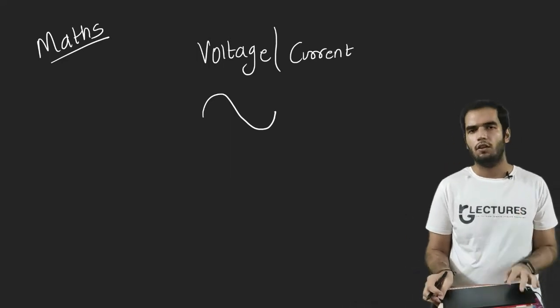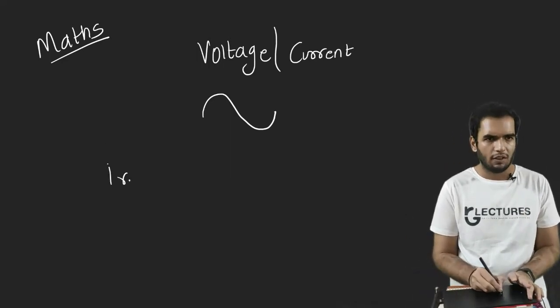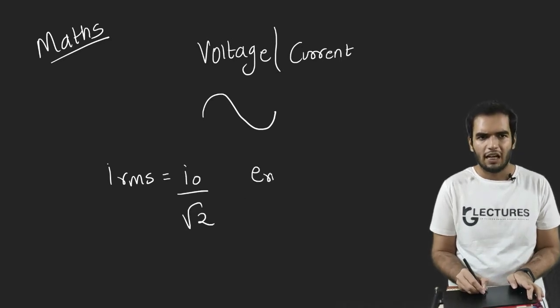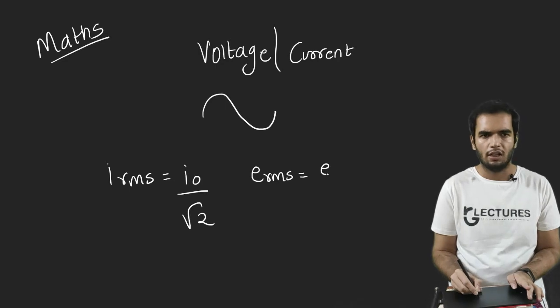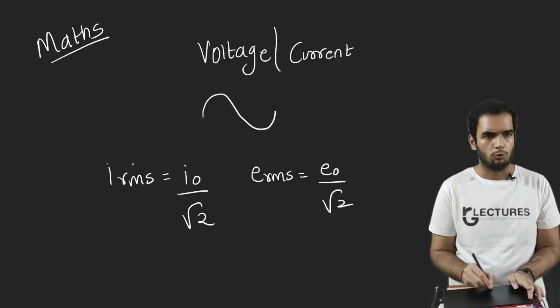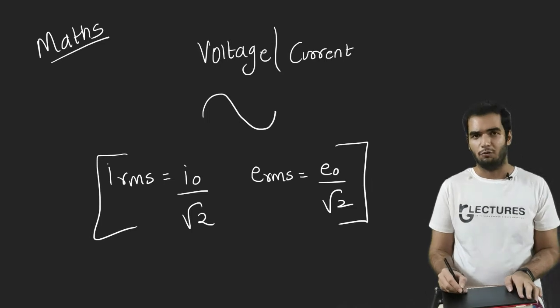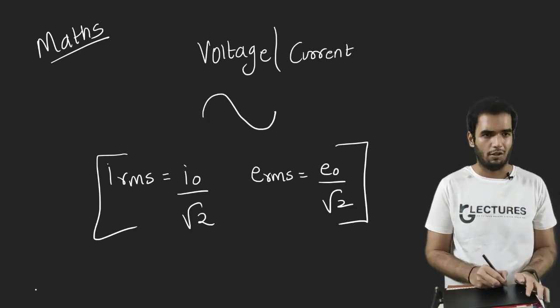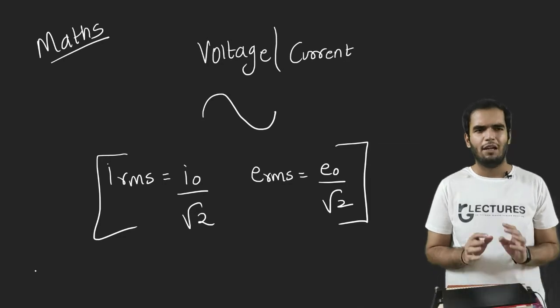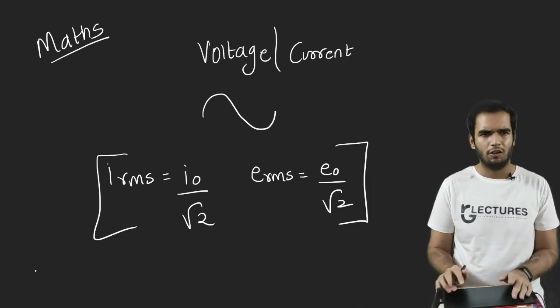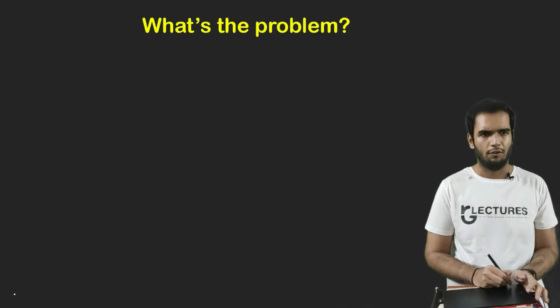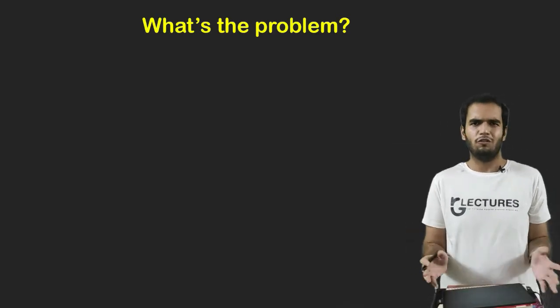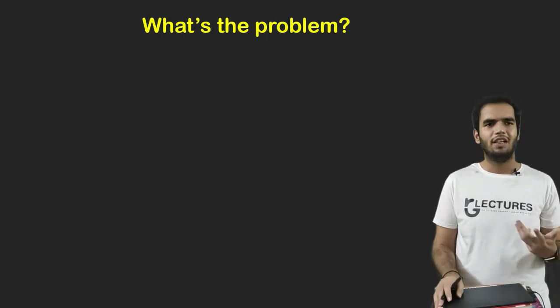Now, you all must have seen this formula I_RMS equals I0 upon root 2 and E_RMS or V_RMS equals E0 upon root 2. But what is the significance of the RMS value, where does it used, where do we use RMS value? So let's start with that.